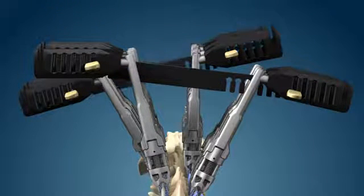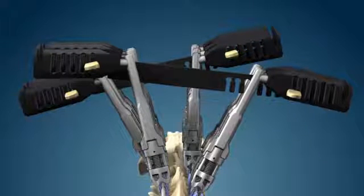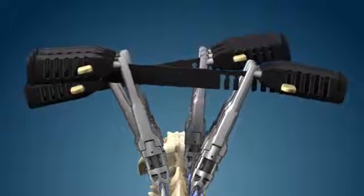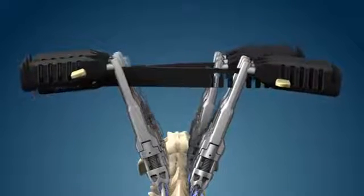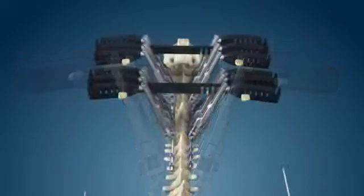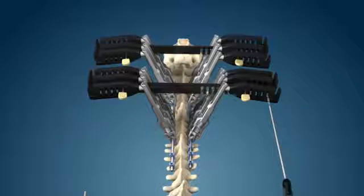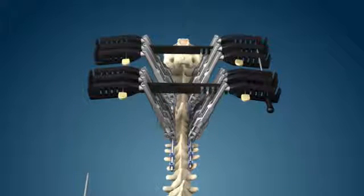The spine is derotated by slowly rotating the clusters in opposing directions over approximately 15 seconds. With desired axial plane correction achieved, cluster alignment rods are inserted to hold the correction in place. Holding a slight overcorrection will account for elastic rebound in the construct when instruments are removed.